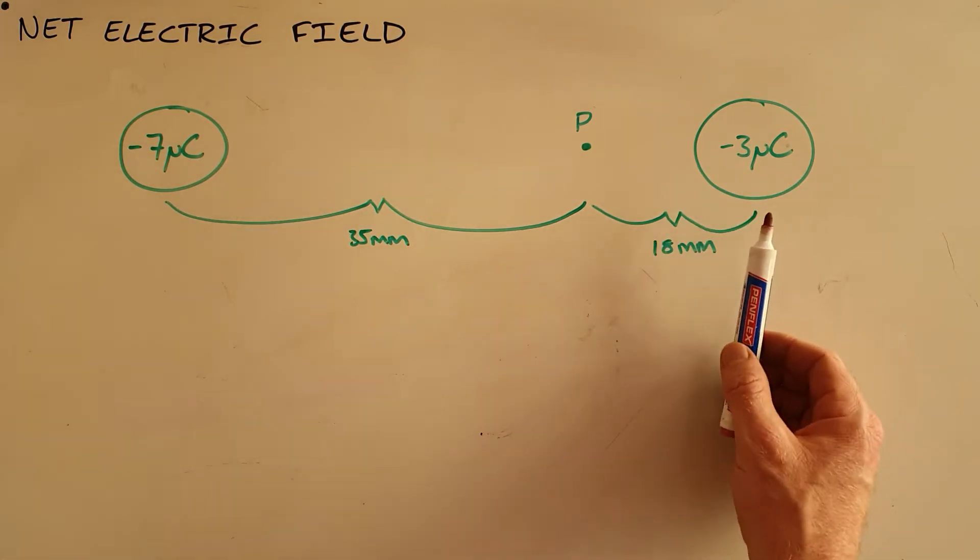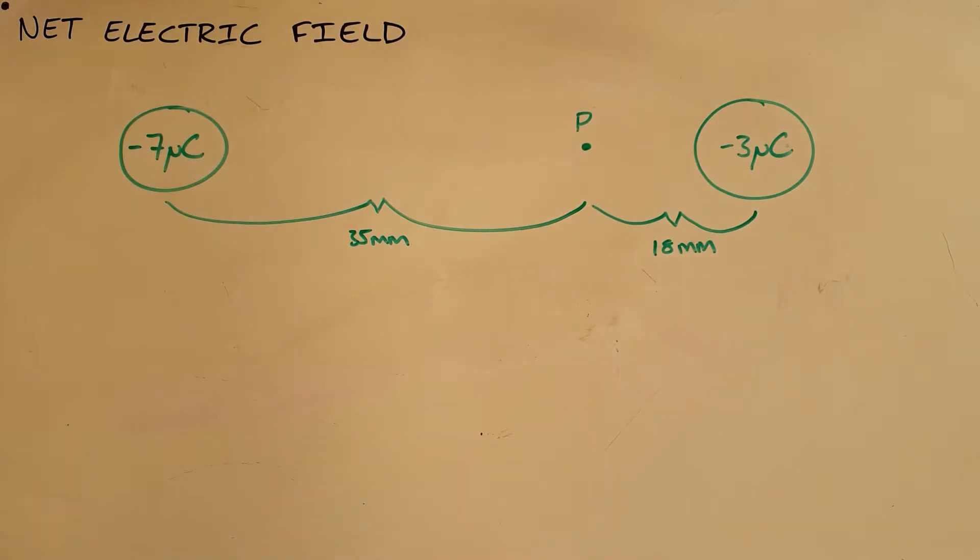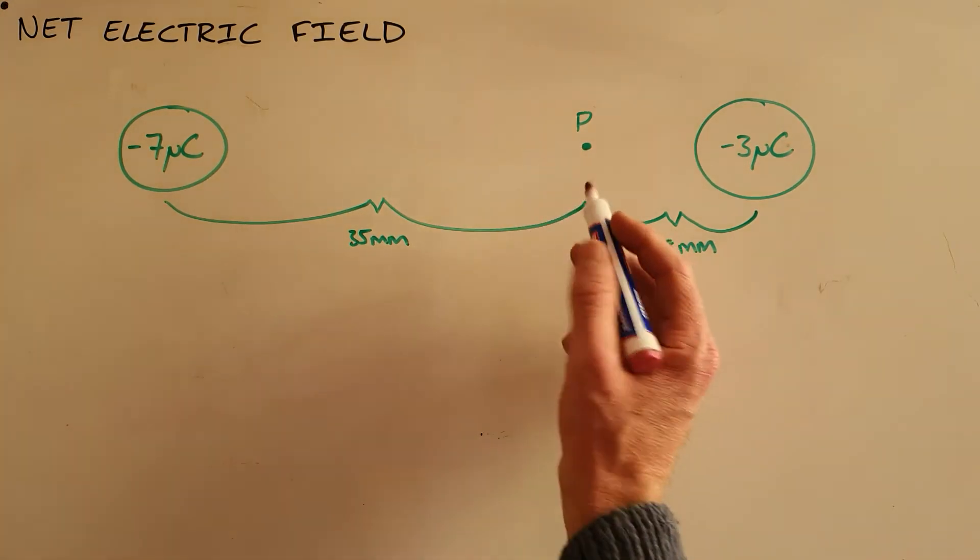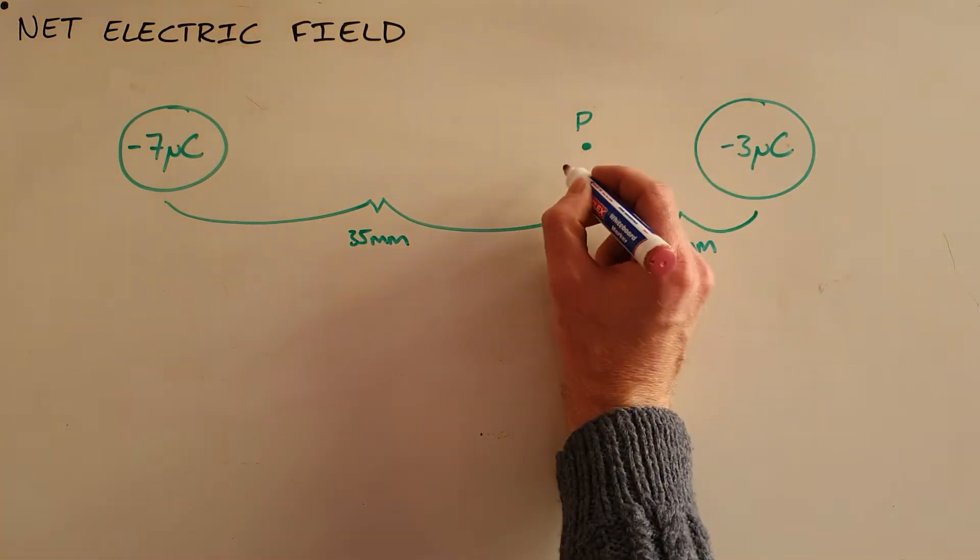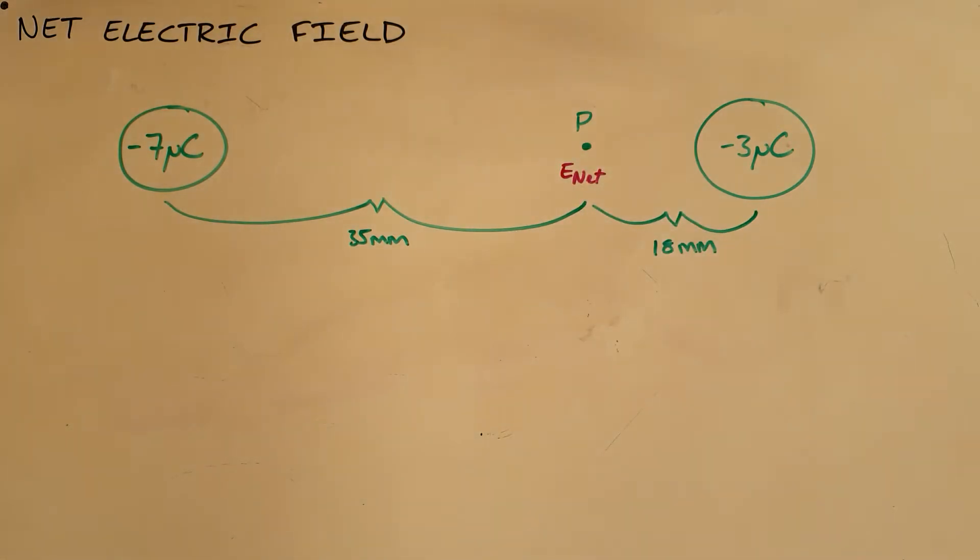We are given two charges and some point either in between them or on one side of those charges, and asked to calculate the net electric field at that point. And just like we would calculate the net force, all that we need to do here is see that the net electric field is just going to be the sum of the electric fields at that point.